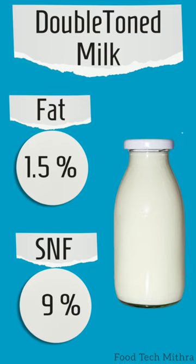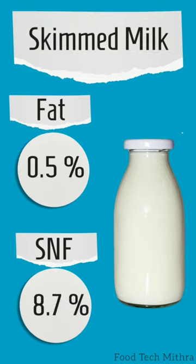Double toned milk is low in fat and calories and suitable for people who are trying to lose weight. Skim milk is made by removing all the milk fat from whole milk, and it contains 0.5% fat and 8.7% SNF.